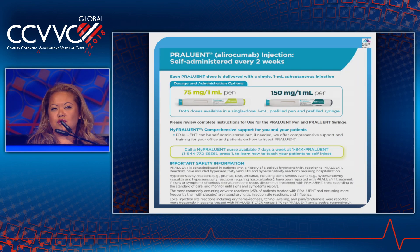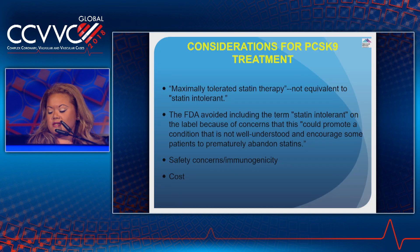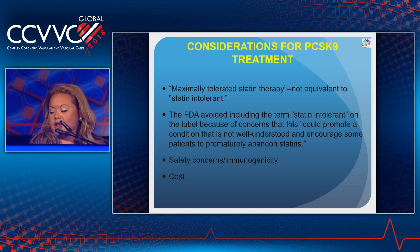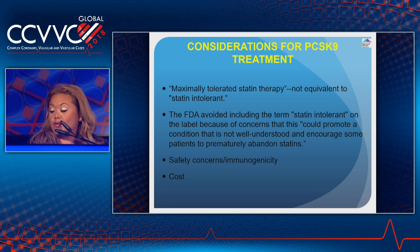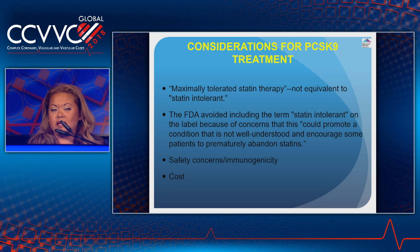This illustration shows Praluent pre-filled pens for both the 75 and the 150 milligram dosages. Considerations for PCSK9 treatment focus on an important distinction in terms of usage and insurance coverage. The determination of an inability to tolerate statin therapy is complex and requires assessing whether symptoms are real or perceived, as well as whether alternative therapies such as switching to a different statin or alternating dosing can treat the dyslipidemia. It's very important to distinguish between a patient who has reached their maximally tolerated level of statin therapy versus one who simply cannot tolerate their statin.